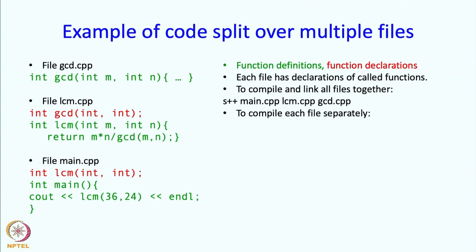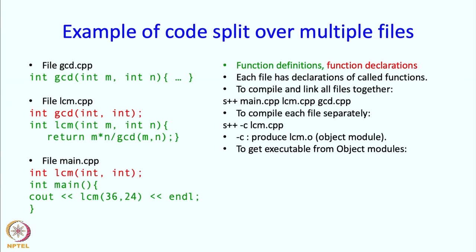If you want to compile each file separately, you write g++ with the compiler option -c, which means compile only, do not link. For example: g++ -c lcm.cpp produces lcm.o, which is an object module — something that is partially compiled. Once you have all these object modules, you can link them together by writing: g++ main.o lcm.o gcd.o. This will produce your executable.